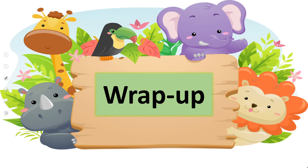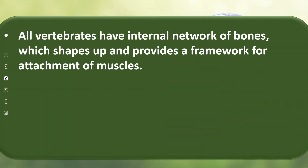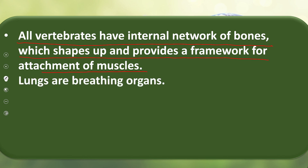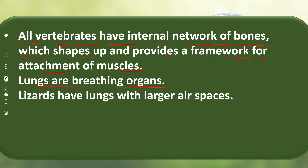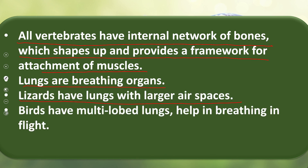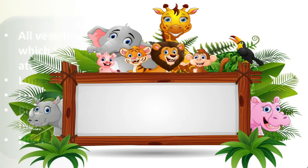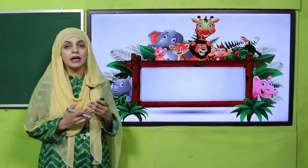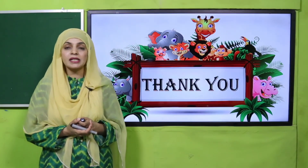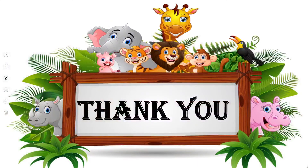Today we have learned that all vertebrates have an internal network of bones which shape up and provide a framework for the attachment of muscles. Lungs are breathing organs — lizards have lungs with larger air spaces, birds have multi-lobed lungs that help in breathing during flight, and humans have a pair of lungs with tiny air sacs. I hope you have enjoyed today's lecture. Keep everybody around you safe, have a good day. Thank you so much, and Allah Hafiz.